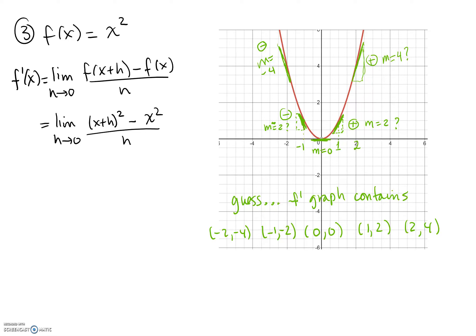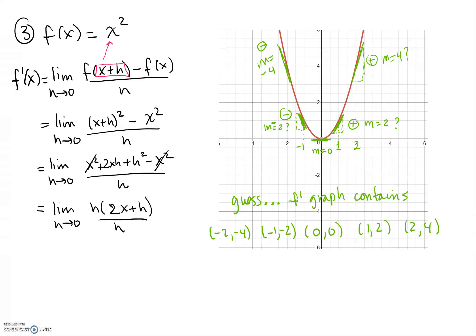I'm going to look at the limit of the difference quotient. I'll plug in x plus h into my function — that's f of x plus h — and then we subtract f of x, which is x squared. Do the algebra: squaring the binomial gives me that trinomial. We simplify, cancel the h's, and end up with the limit as h goes to 0 of 2x plus h. Since h is going to 0, that piece is gone, and we end up with f prime of x equal to 2x.